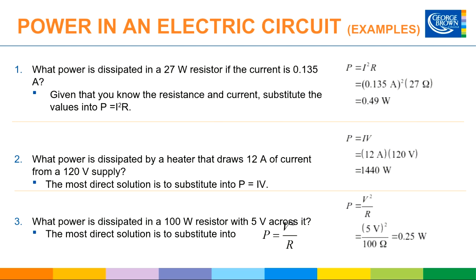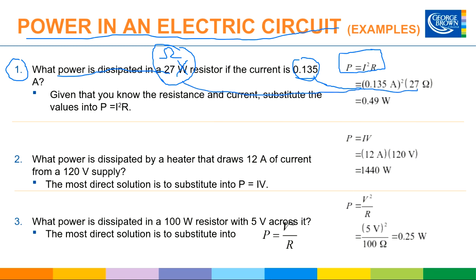Here's a couple of examples. Example one: What power is dissipated in a 27-ohm resistor if the current is 0.135 amperes? This should be ohms, not watts—that's a typo. In this case, we know the current and the resistor value, so the best format is P equals I squared R. Plugging in the values, you should get 0.49 watts.